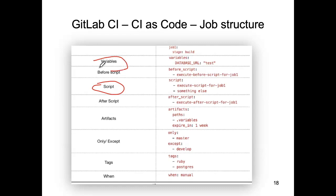As well as the scripts section there are other sections. There's a variables section where you can declare variables that may be used in other parts of the job, such as in the script section. There is a before_scripts section — anything in there is executed before the main script section. There's also an after_scripts section for commands you want executed only after the scripts section has completed. All of these contain shell or terminal commands that the GitLab CI server will execute.